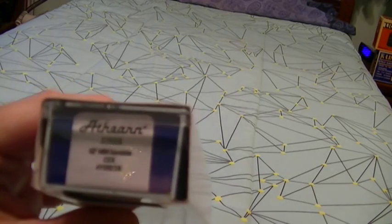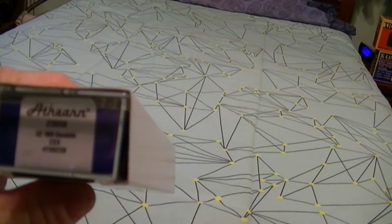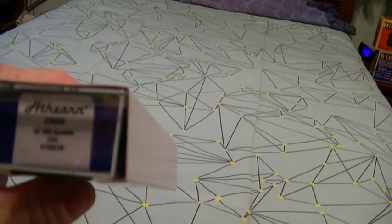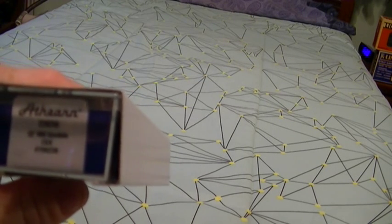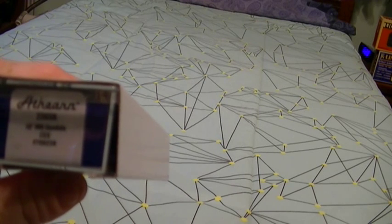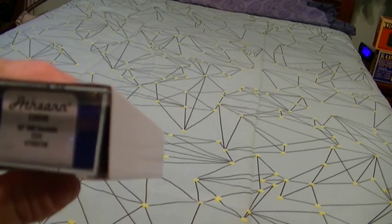First thing, it's an Athearn item number 23656. It's a 52 foot mill gondola, CSX 709238.